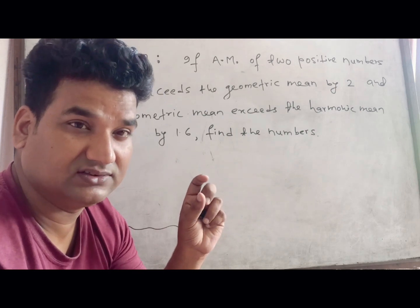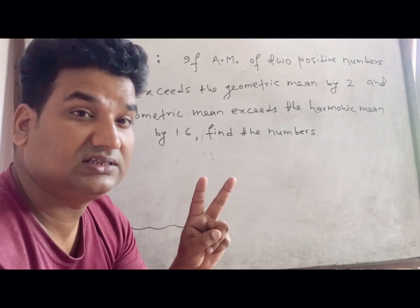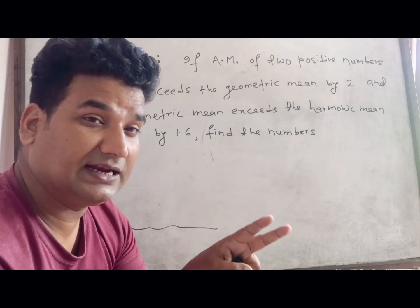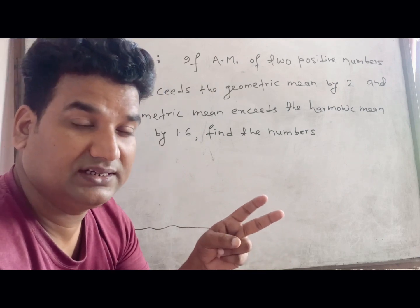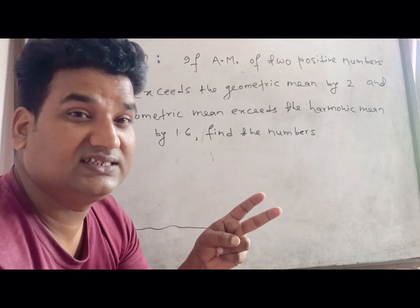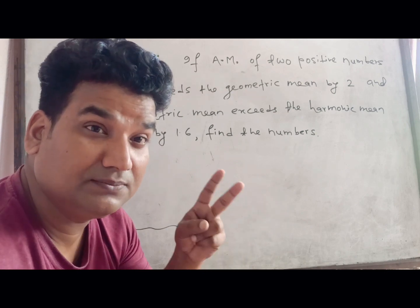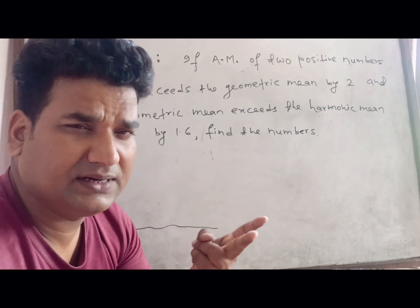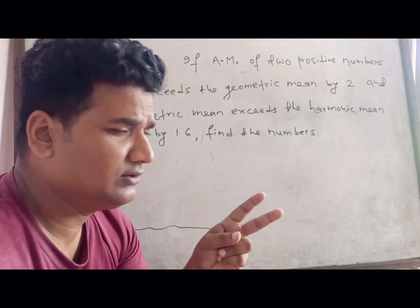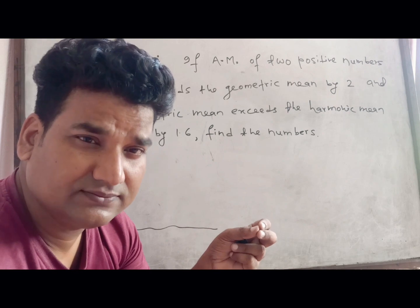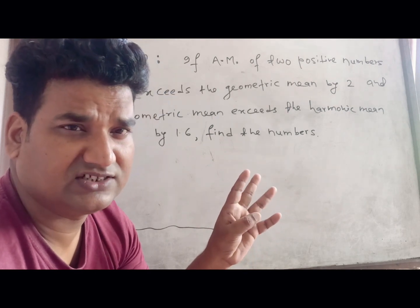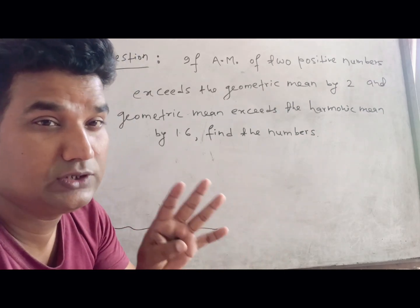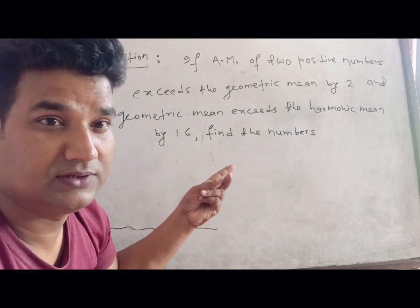If you have a question, you will find a positive number which is a geometric mean, which is 1.6. If you have a positive number, you will find a small a and a small b. Let the numbers be required — a small a and a small b.